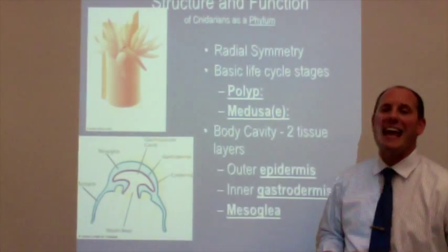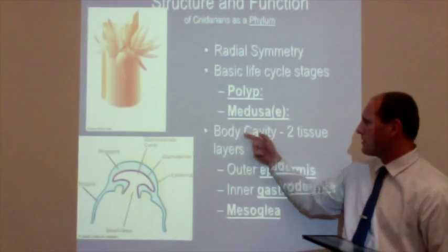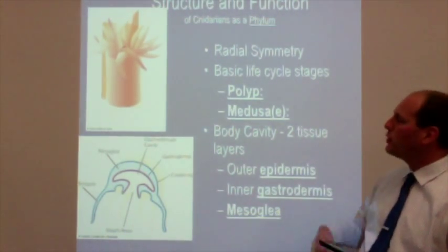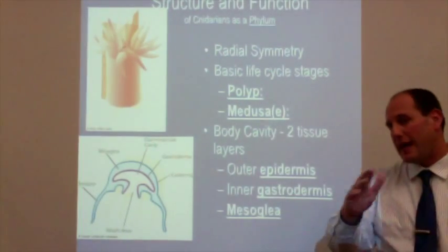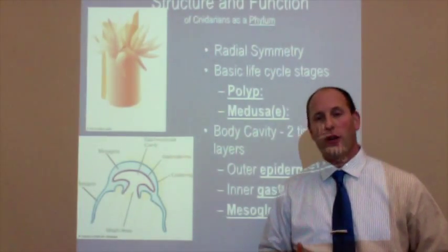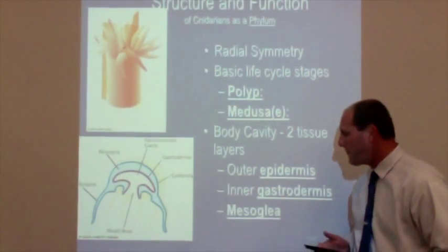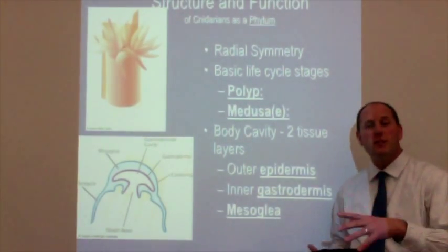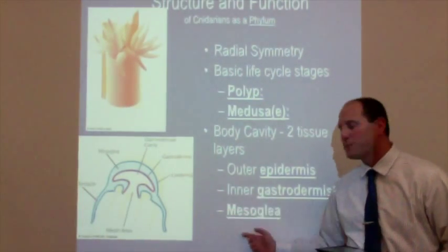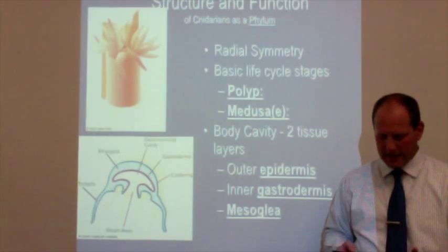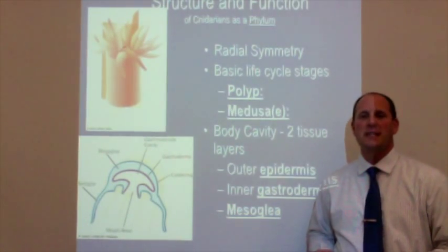For their body cavity, similar to sponges, there are two distinctive layers. They have an outer epidermis — the skin layer — and an inner gastrodermis, which relates to the gastrointestinal area and is involved in the digestive process. One unique feature is that, like those porifera, they also have a jelly-like substance between those two layers called the mesoglia. That jelly-like substance is where we get the name 'the jellies.'